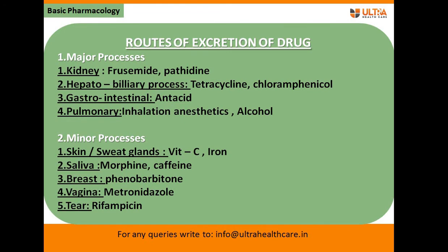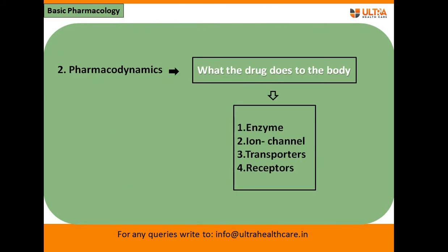The minor process pathways involve the skin, sweat glands, saliva, breast, vagina, and tears. These are the minor routes of excretion, and several drugs are excreted through these minor pathways.